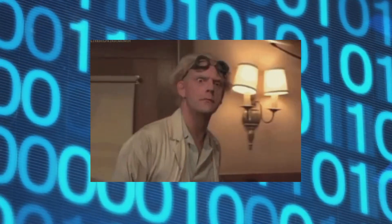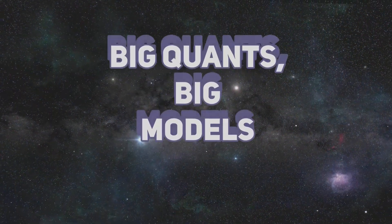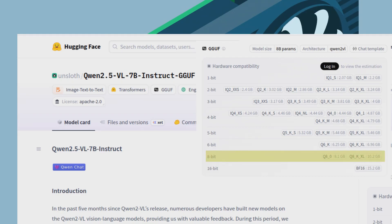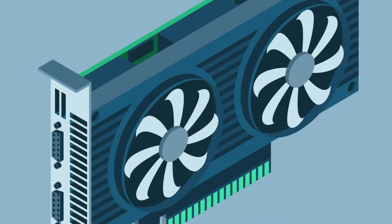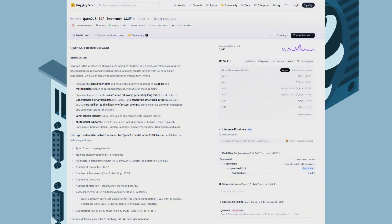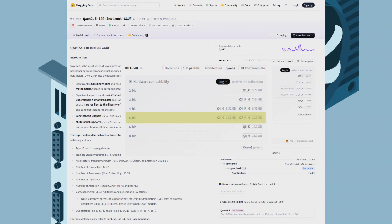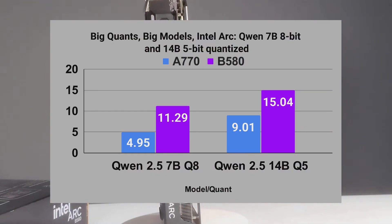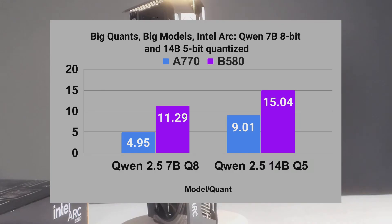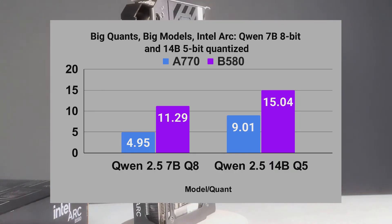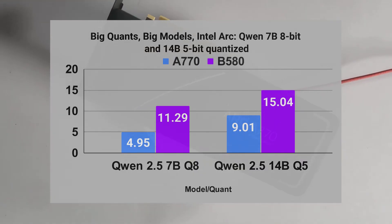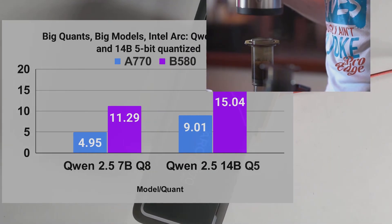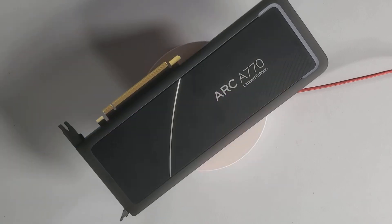Now things get heavy. This round includes Qwen 2.5 7 billion quantized to 8-bit precision, about 8 gigabytes in size, and Qwen 2.5 14 billion quantized to 5-bit precision, which requires about 10.5 gigabytes of VRAM. Both cards struggled. I expected that from the B580 — Qwen 2.5 14 billion pushes close to its 12-gigabyte VRAM limit. It's tight but doable. But I was shocked that the A770 struggled even more. The A770's token generation speed dropped to just a few tokens per second — almost slow enough to go make a cup of coffee while the response comes in. The B580 stayed a bit faster and more usable, despite its lower specs.